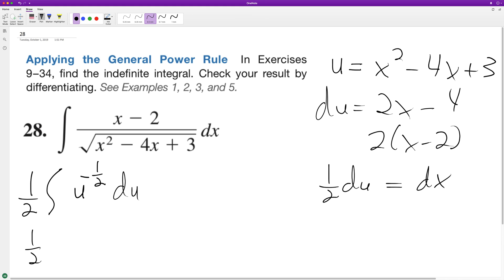So now we can integrate: one half times u raised to the negative one half plus one, over negative one half plus one, plus C. So this becomes one half times u raised to the one half. And this becomes two; these cancel out, and we're just left with u raised to the one half.